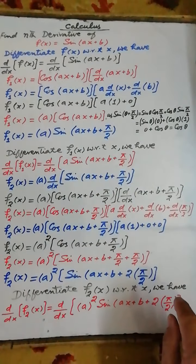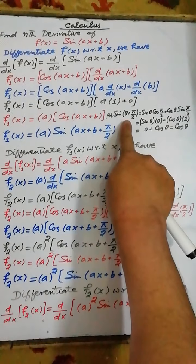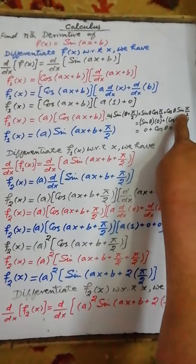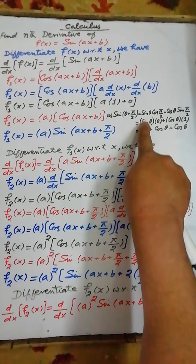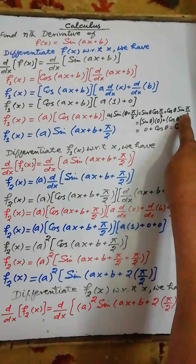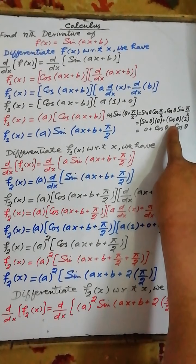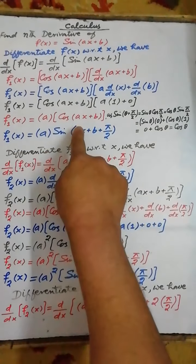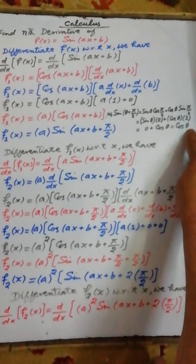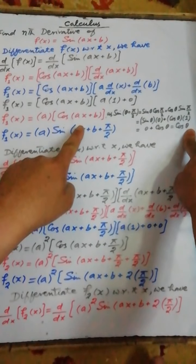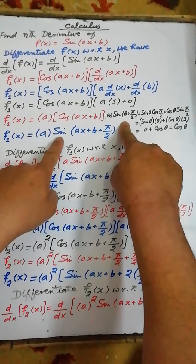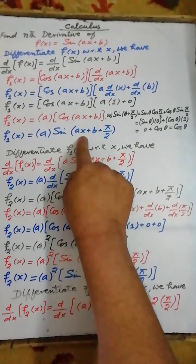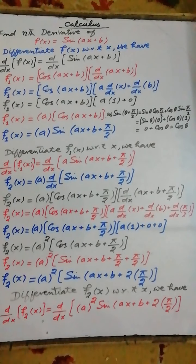From the fundamental law of trigonometry, sin(θ + π/2) = sin(θ)·cos(π/2) + cos(θ)·sin(π/2). Since cos(π/2) = 0 and sin(π/2) = 1, this simplifies to cos(θ). Therefore, cos(ax + b) = sin(ax + b + π/2), when we consider ax + b as θ, to convert the cosine result back into a sine function.